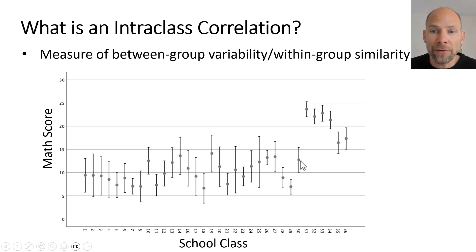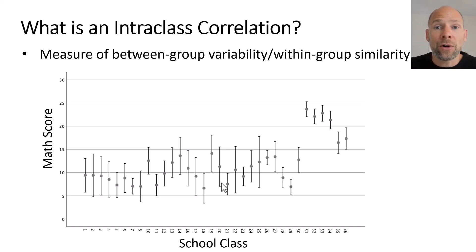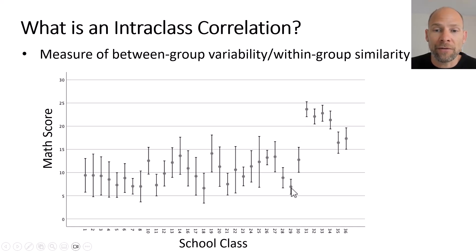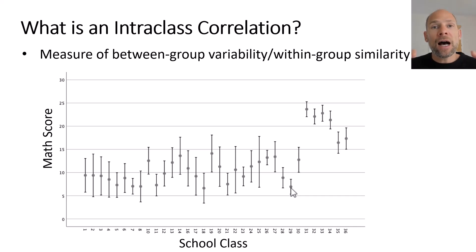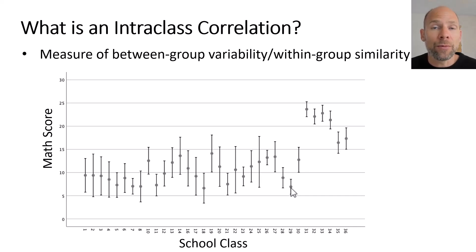Overall there is variability within groups — within school classes. In addition, there is also considerable between-groups variability. There are huge differences between school classes: some scored with an average near 25 whereas others scored with an average near 7. We can use the intra-class correlation coefficient to measure, in a single number, what proportion of the variance in math score ability was between school classes versus within school classes.